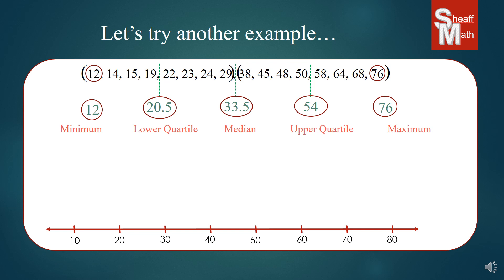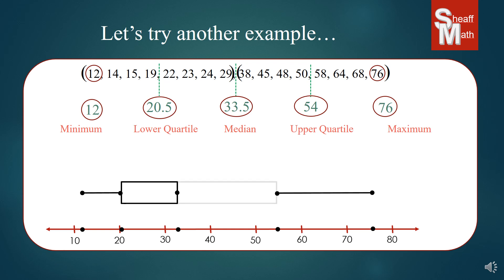We then go to our next step — we make a number line. These numbers go from 12 all the way to 76, so I go just below and just above. The easiest way for me was to go by tens, from 10 to 80, so I'd cover everything and it would go almost to the ends of the number line. I plot my five numbers: 12, 20.5, 33.5, 54, 76. Then I put my points above the number line, make my whisker on the left and my whisker on the right, and then my boxes in the middle. And it's that easy.